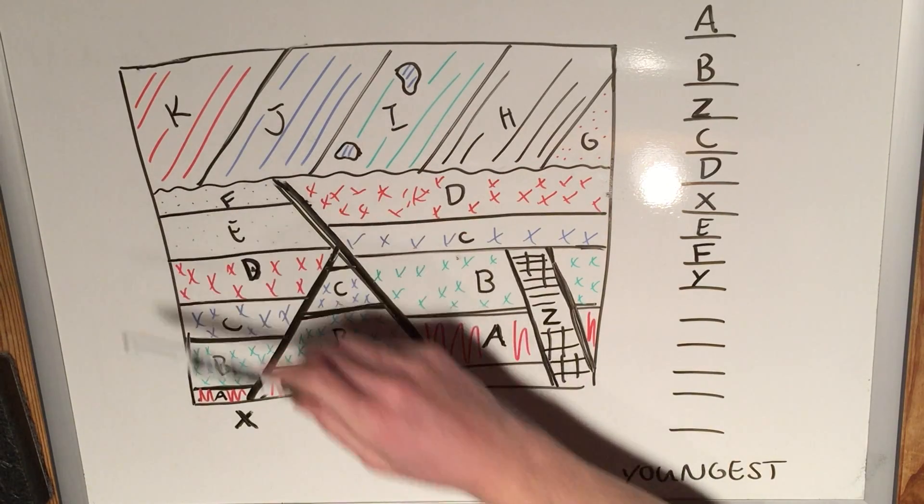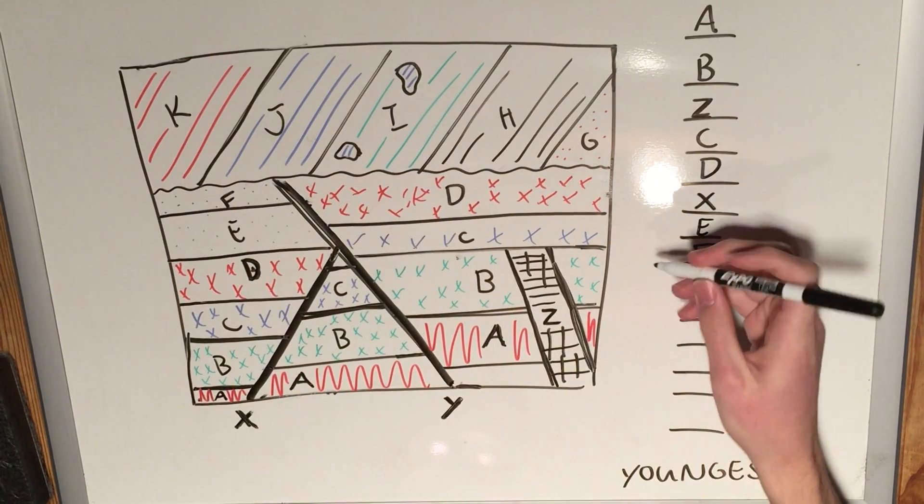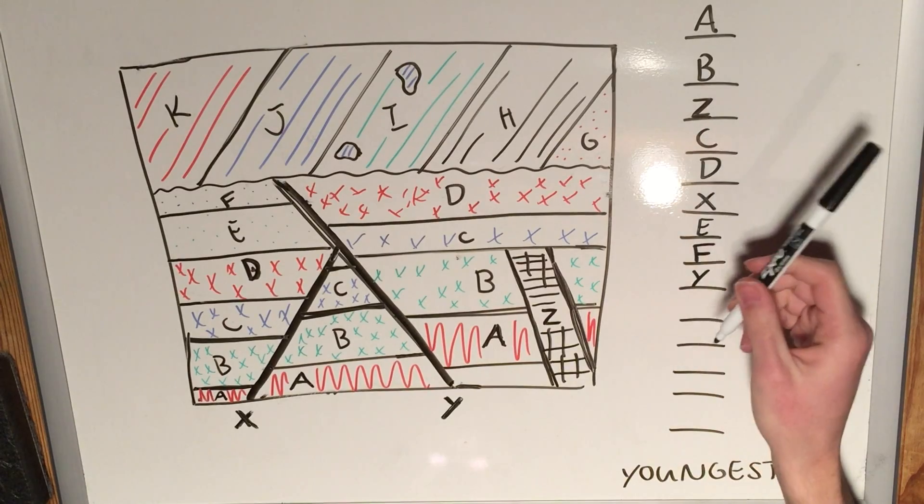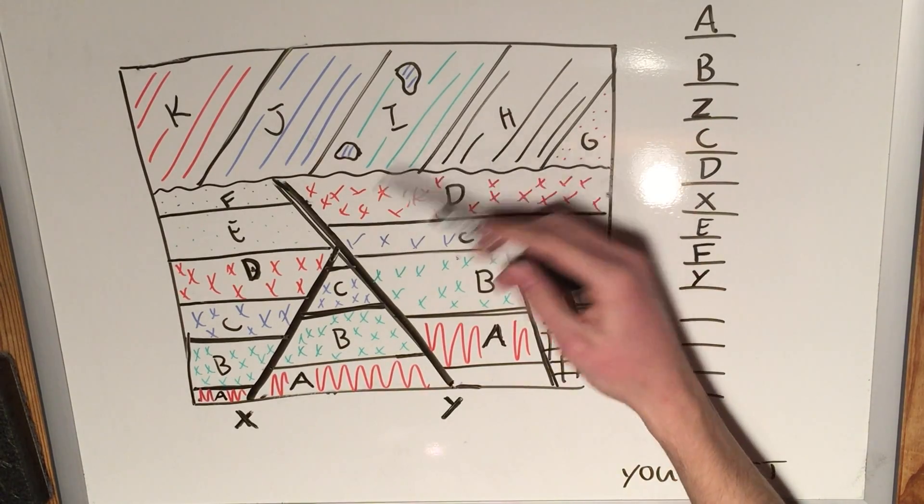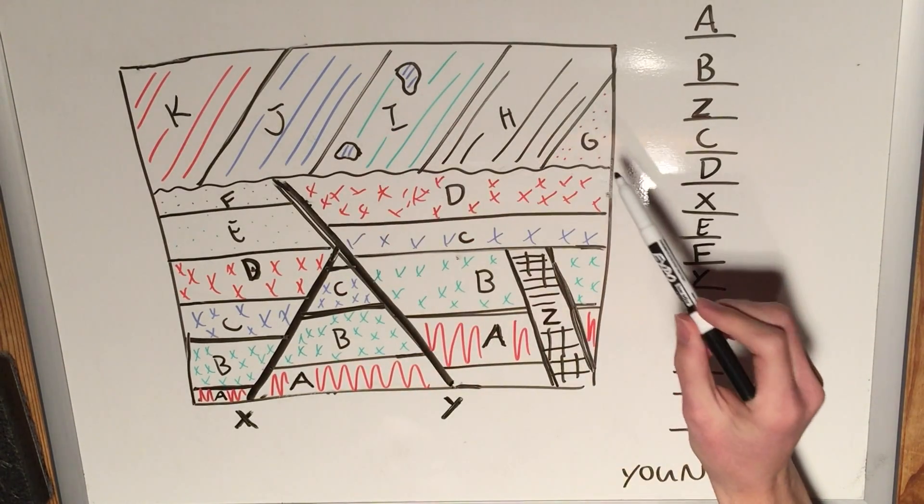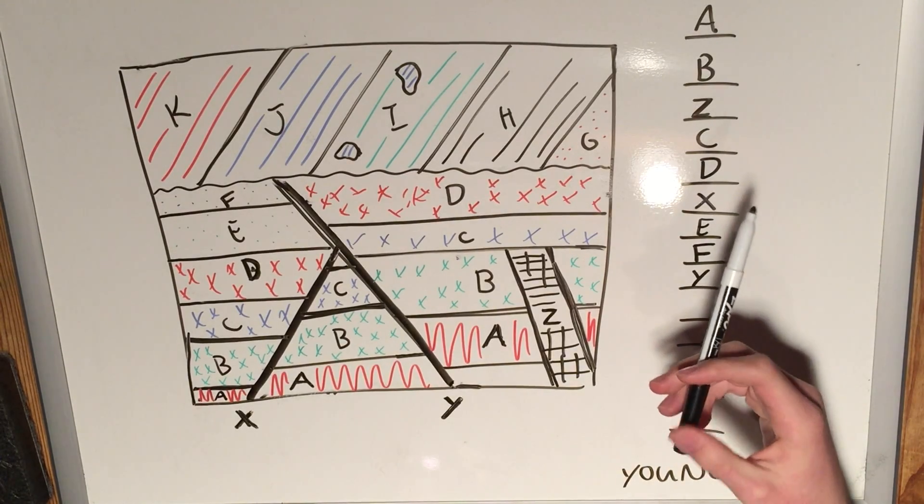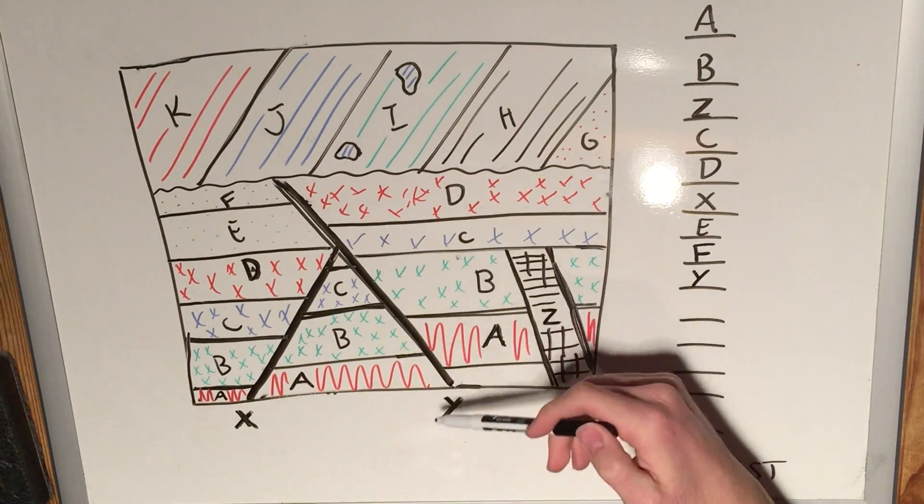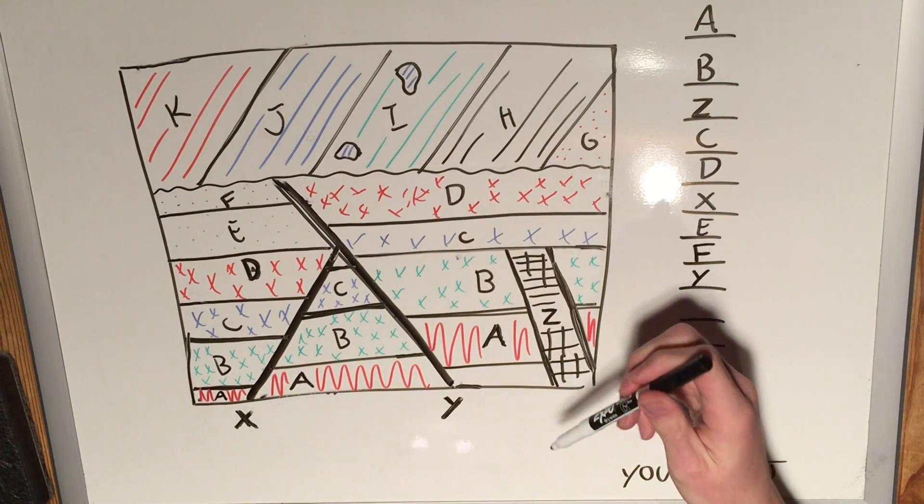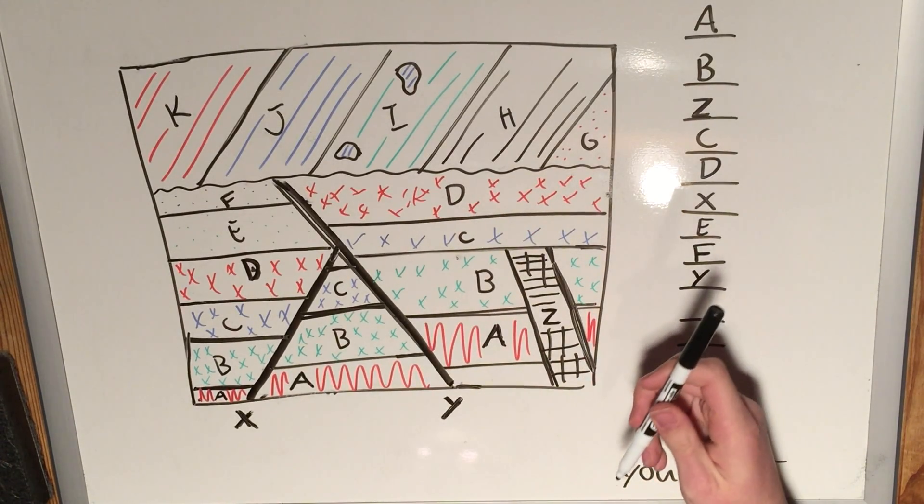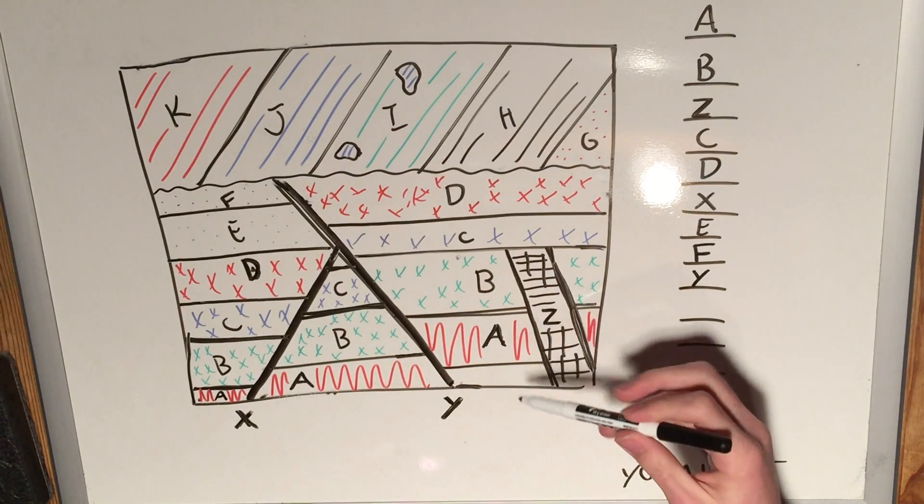Now we get up to this portion here. Now we have strata that aren't perfectly horizontal, so we can definitively say that some sort of folding or tilting, some sort of pressure, has caused these to be at this angle. Now when we're ordering these, it's not as easy as just ordering horizontal layers of strata because one isn't really above the other.